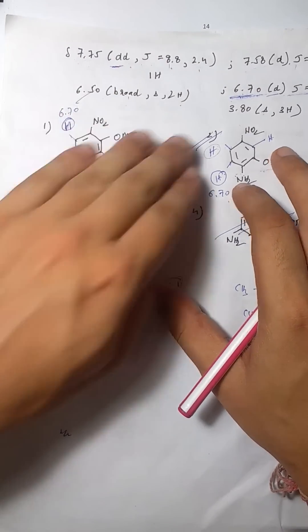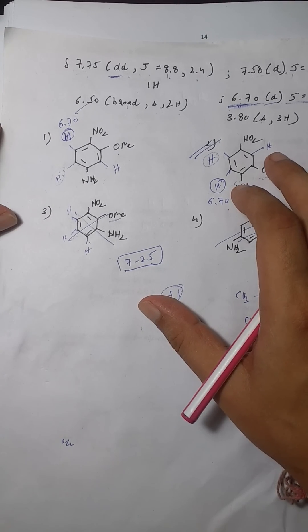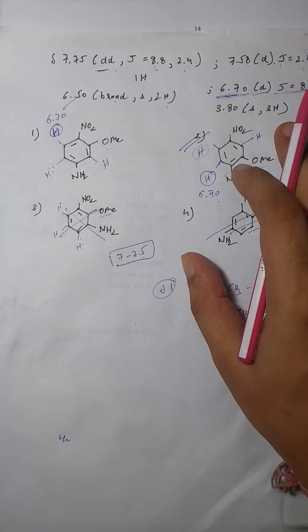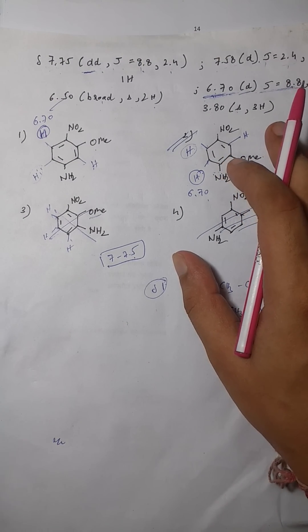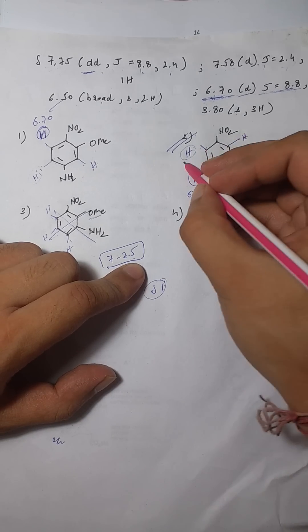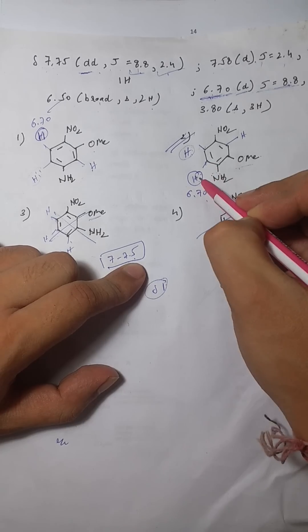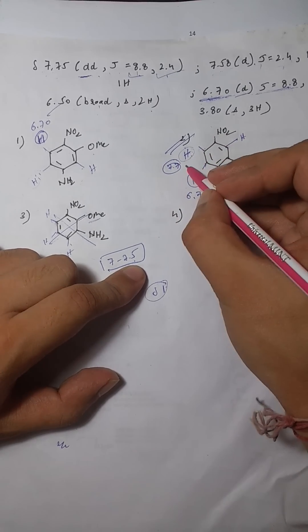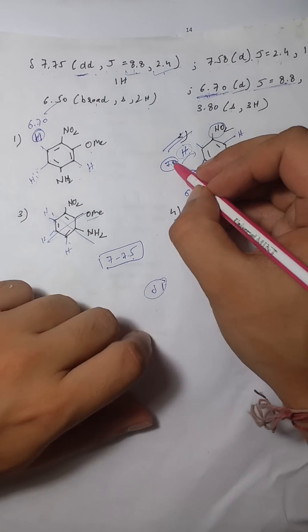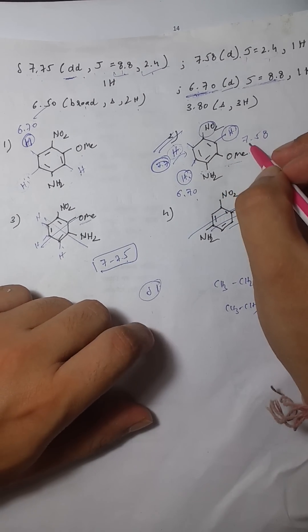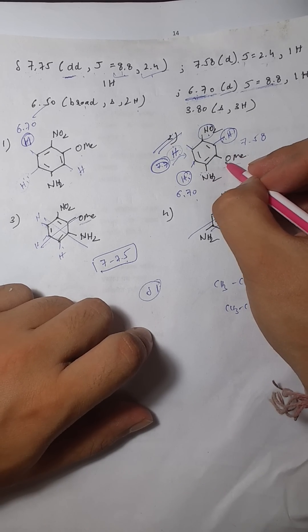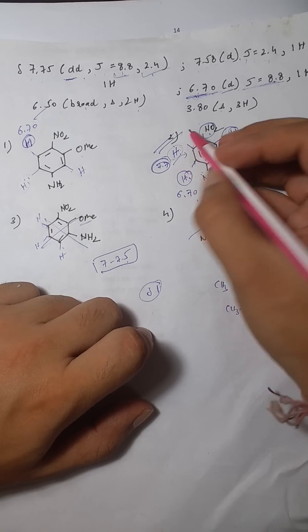Let's confirm quickly. The doublet-of-a-doublet proton undergoes ortho and meta coupling, and since the electron-withdrawing nitro group is ortho to it, it's highly deshielded — that's the 7.75 value. The remaining proton at 7.58 is in the middle because on one ortho side it has an electron-withdrawing group and on the other it has an electron-donating group. This confirms our answer.